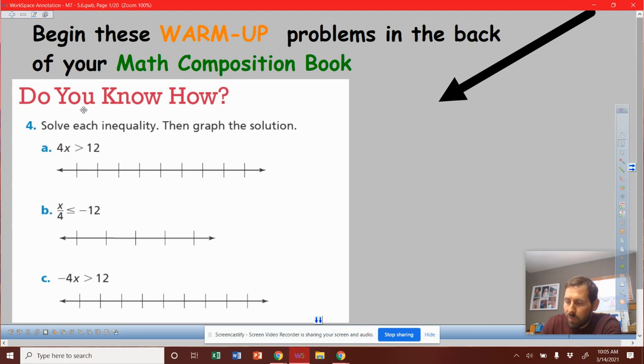Just like solving equations, we focus on the variable and we say what's bothering it, what's attached to it. This one is times 4. So 4x, and it's times 4, so we're going to divide by 4 over here and divide by 4 over here.